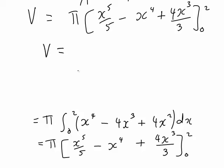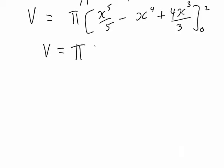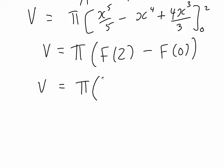That will then become π multiplied by the antiderivative evaluated at 2 minus the antiderivative evaluated at 0. Therefore, it will become π times [2⁵/5 - 2⁴ + 4(2³)/3] minus [0⁵/5 - 0⁴ + 4(0³)/3]. Subtracting all of that will just be subtracting 0.